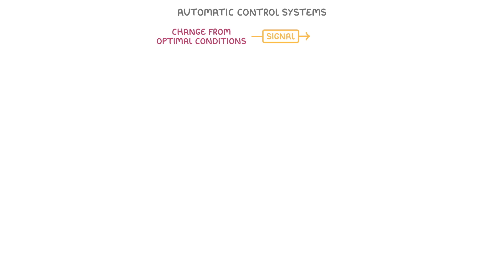To do this, our body uses automatic control systems that can basically recognise when there's a change from optimal conditions, and then send a signal to reverse that change, so that the levels go back to normal.